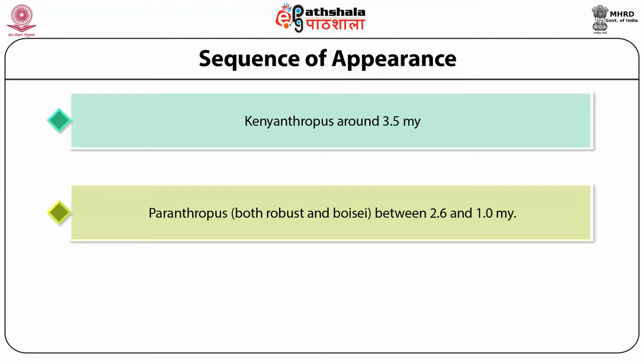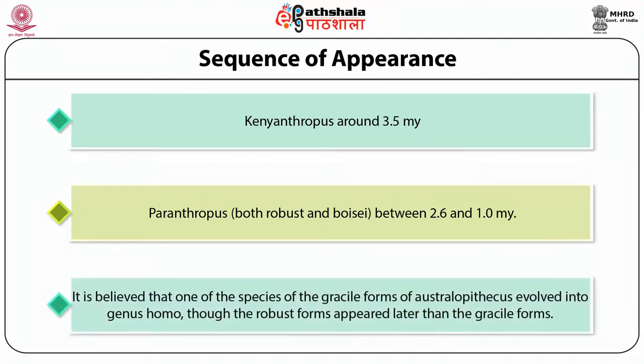Despite these varieties, paleoanthropologists — scientists who study human fossils — identify two major forms of Australopithecus: gracile and robust. Some scholars prefer to keep them in two different genera, that is Australopithecus for the gracile form and Paranthropus for the robust form. It is believed that one of the species of the gracile form of Australopithecus evolved into genus Homo, although the robust form appeared later than the gracile form.